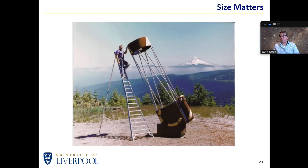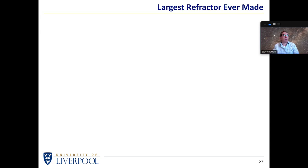Size does matter, which is why some people just go for the largest Dobsonian telescope they can conceive of building. This appears to be at a rather dark site - it doesn't seem to be anywhere other than the middle of nowhere. You can imagine on a very dark site it might be a little bit scary going up a stepladder at a considerable height over the ground if you were looking at an object close to the zenith.